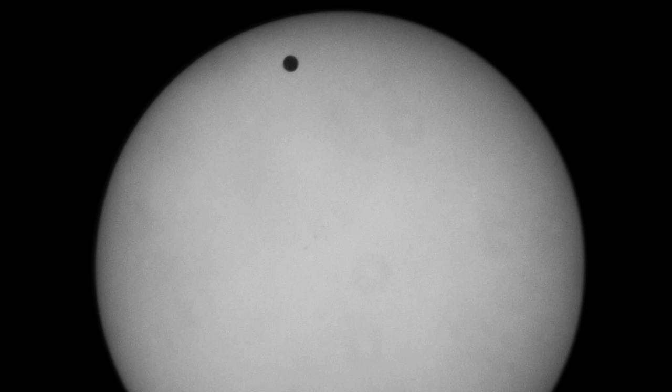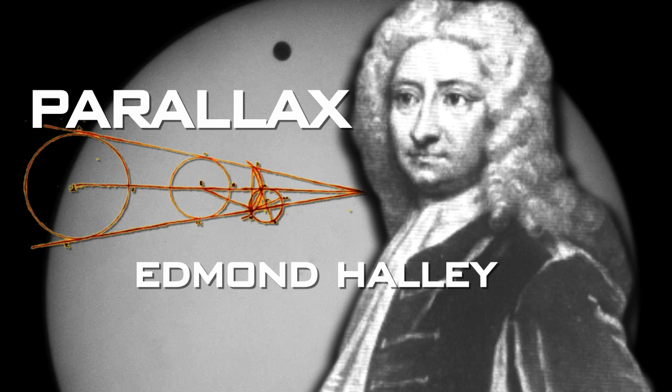In 1719, English astronomer Edmund Halley proposed that the mathematics of parallax could be used to find the actual distance of Earth to the sun.